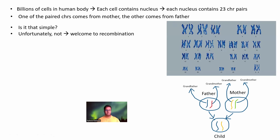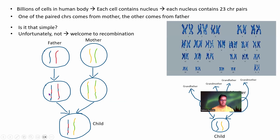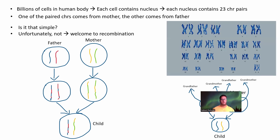But is it that simple? Unfortunately not. There is something called recombination, which I don't want to skip just to simplify the video. What happens is there is a phenomenon of recombination where these two chromosomes sort of exchange genetic material with each other. This is an extremely random event and can happen at any place. After this, the inheritance happens — the child inherits one recombined chromosome from the father and one from the mother. You and your sibling are very different because of the randomness in the recombination process.